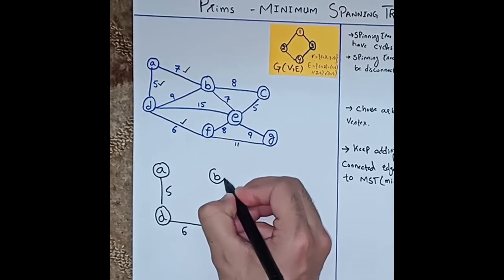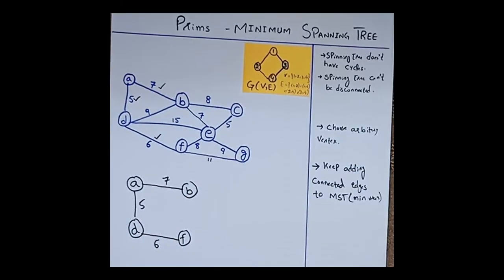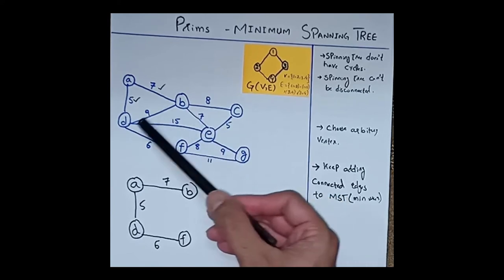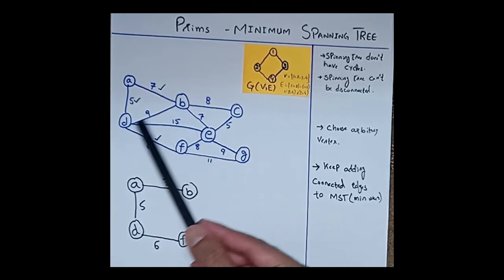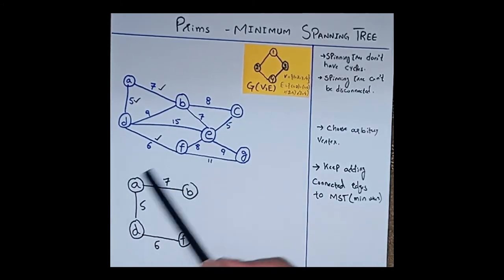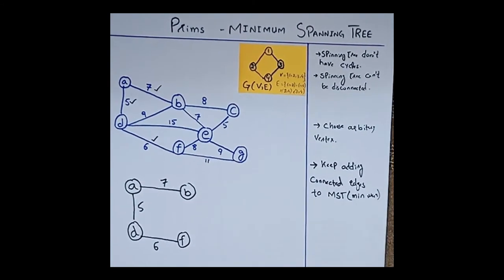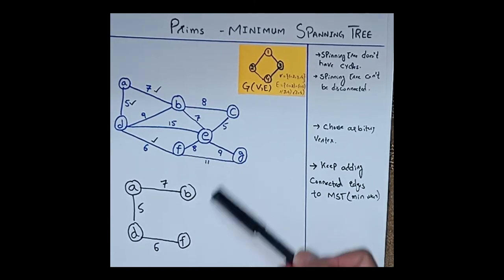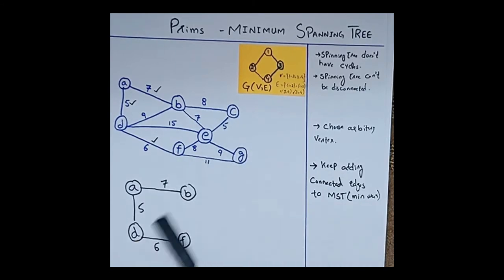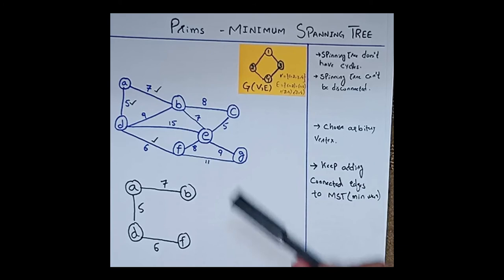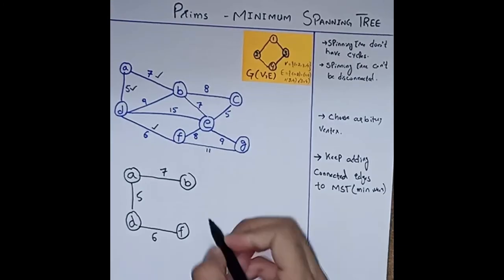The next path chosen is A to B with weight 7. Now we consider these four vertices. An important point: B is connected to C with weight 8, to E with weight 7, and to D with weight 9. However, if we consider the B-D edge, a cycle will form, so we cannot include it. B is connected to E with weight 7. F is connected to E with weight 8 and G with weight 11. Out of these, the minimum possible weight is B to E, that is 7.